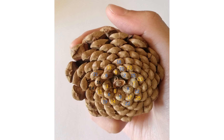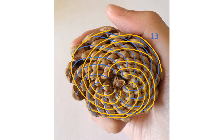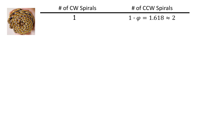But one thing doesn't change. The leaves always grow one-phi-th of a circle clockwise or one-phi-th of a circle counterclockwise apart, so the clockwise spacing is always phi times the counterclockwise spacing. It always takes phi times as many leaves to create a counterclockwise offset than a clockwise offset, and so there are always phi times as many counterclockwise spirals as clockwise spirals. For example, for a clockwise growing pine cone: 1 spiral clockwise corresponds to 1 × phi ≈ 1.618 ≈ 2 spirals counterclockwise; 2 spirals clockwise corresponds to 2 × phi ≈ 3.236 ≈ 3 spirals counterclockwise; 3 spirals clockwise corresponds to approximately 5 spirals counterclockwise, and so on.